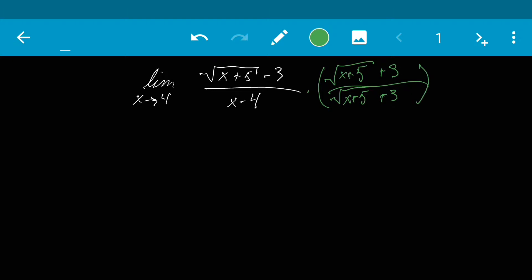So if we multiply the numerator by the conjugate we're going to end up with the square root of x plus 5 minus 3 times the square root of x plus 5 plus 3. That is a difference of squares. So we're going to need to know the difference of squares formula in order to reduce that down. So the difference of squares formula is a plus b times a minus b equals a squared minus b squared.